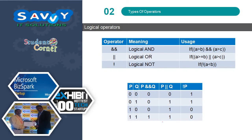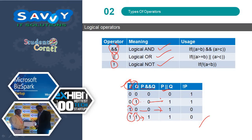Next, Logical Operators: Logical AND, Logical OR, and Logical NOT. AND means both comparisons must be true — then it returns true, otherwise false. Logical OR means any one of the comparisons is true — then it is true, otherwise false. Logical NOT inverts the value: true becomes false and false becomes true.